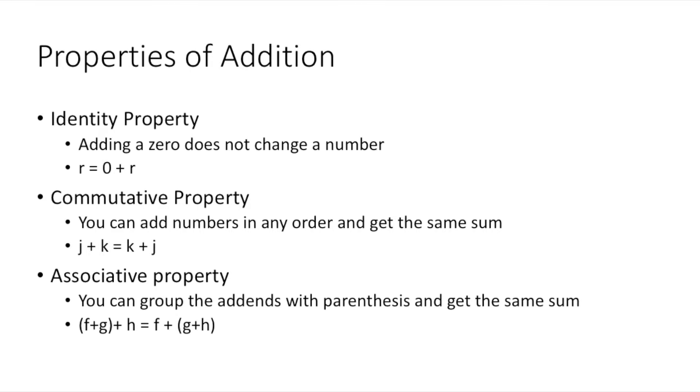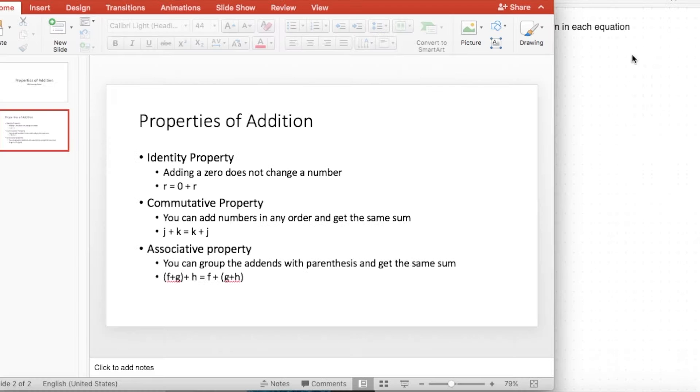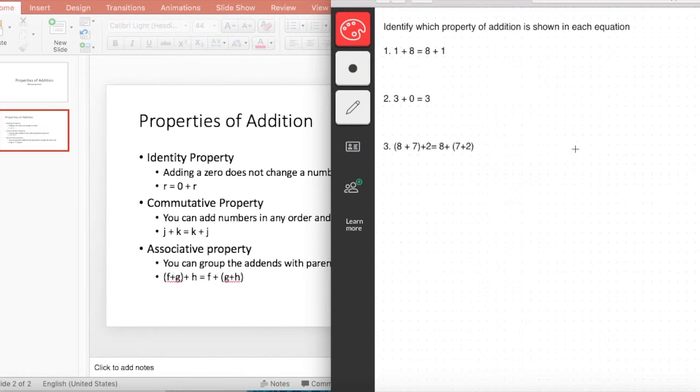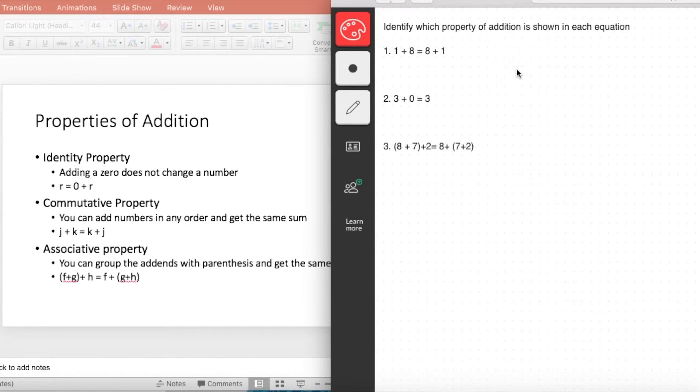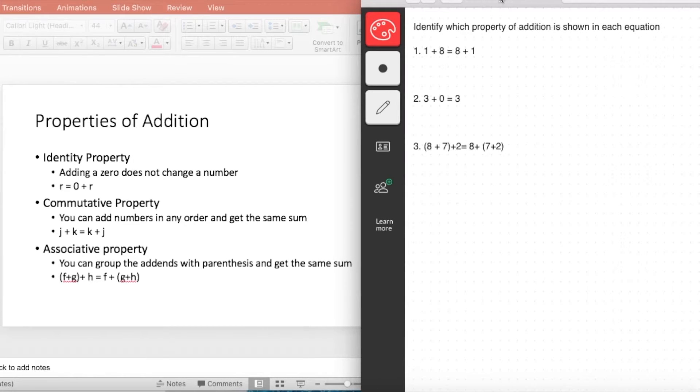Let's try some examples. In this example we're going to identify which property of addition is shown in the equation: 1 + 8 = 8 + 1. Adding a zero does not change a number would not be appropriate. You can add numbers in any order and get the same sum. That would be appropriate. So in this case it would be commutative property.